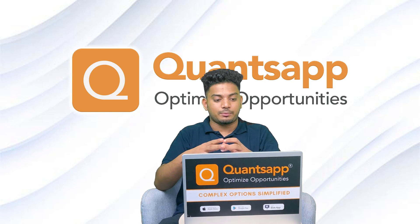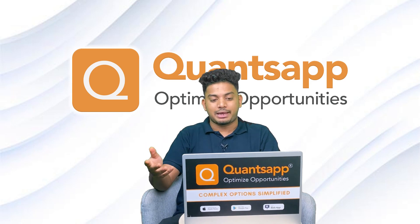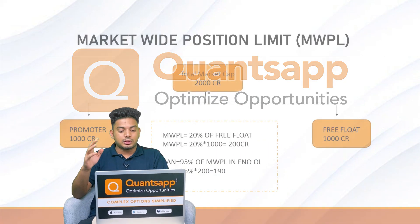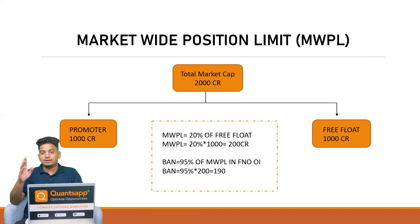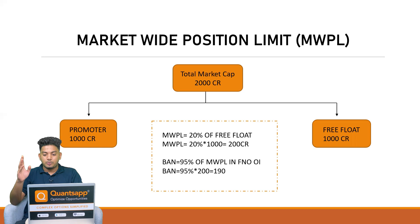A stock with 95% or above Market-Wide Position Limit enters into a ban. So what is Market-Wide Position Limit? Let's say there is a company with a total market capitalization of 2,000 crore, out of which 1,000 crore is held by a promoter and the remaining 1,000 crore is open to the public. That 1,000 crore open to the public is called free float market capitalization. The Market-Wide Position Limit is simply 20% of the free float market cap — so 20% of 1,000 crore equals 200 crore, which is the MWPL.